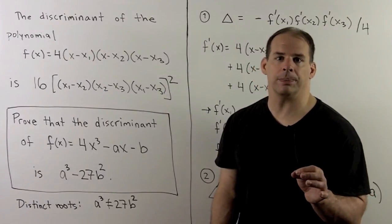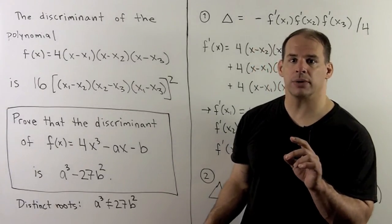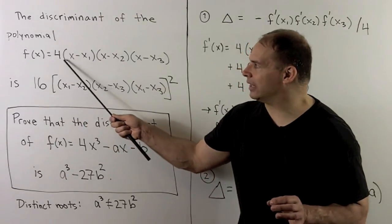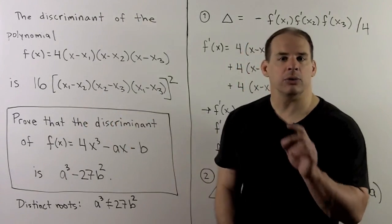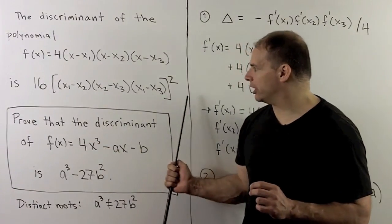Let's consider the following problem. We define the discriminant of a cubic polynomial as follows. For our cubic, we'll assume that the leading coefficient is 4, we factor completely into linear factors, then the discriminant is given by this expression here.